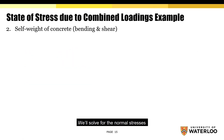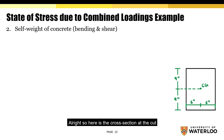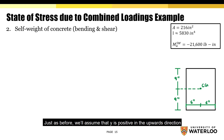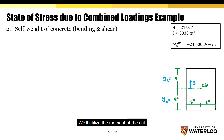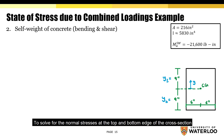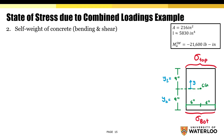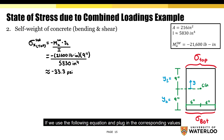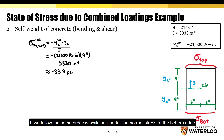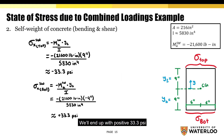On this slide we'll solve for the normal stresses while taking the self-weight of the concrete into consideration. Using the cross-section at the cut and assuming Y is positive upward, we use the bending stress formula with the moment at the cut. The normal stress at the top edge is approximately negative 33.3 psi, and the normal stress at the bottom edge is positive 33.3 psi.